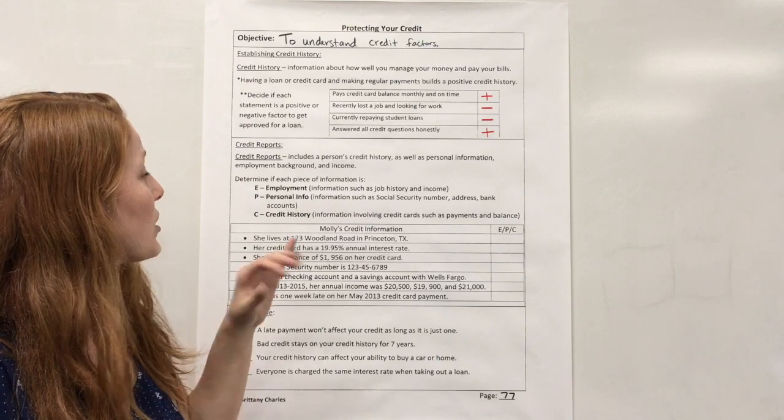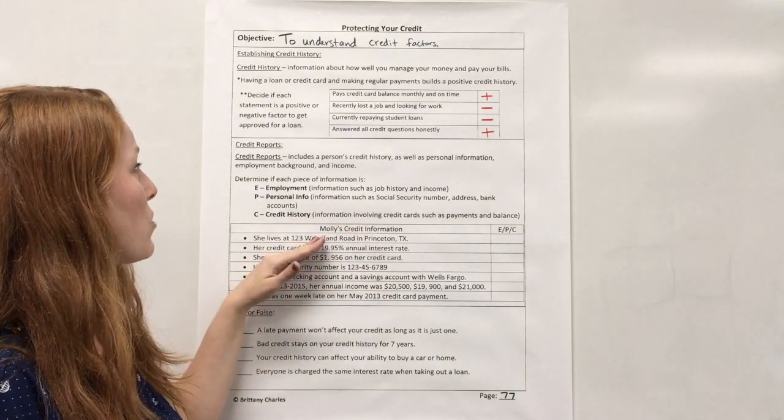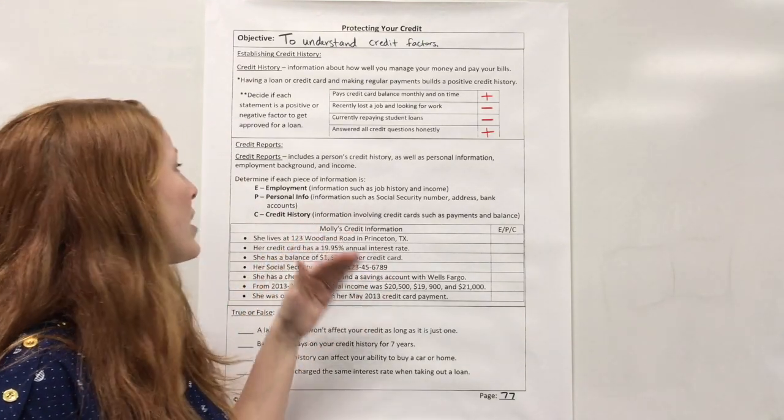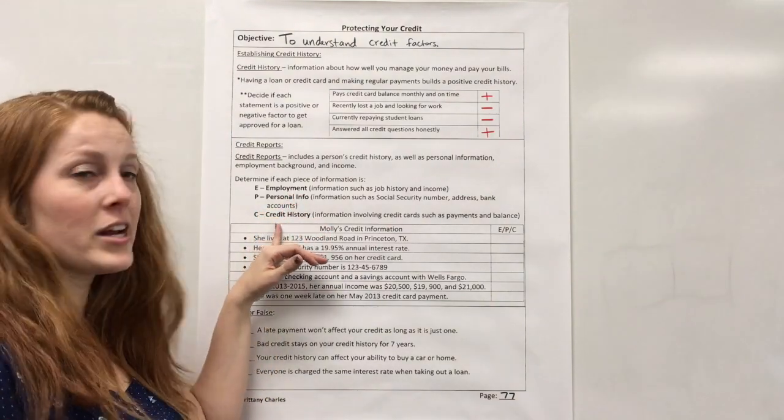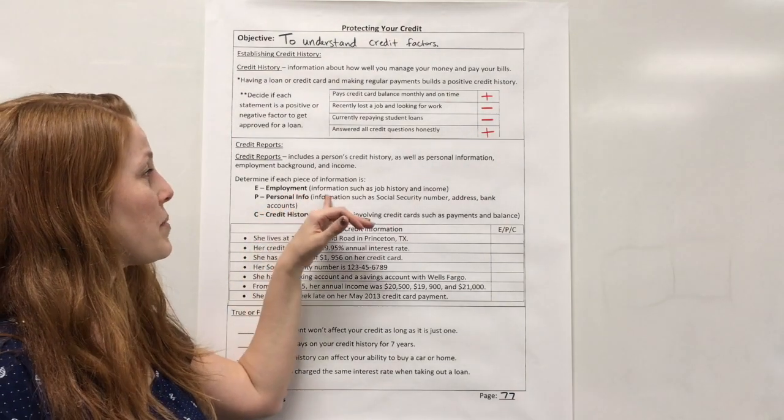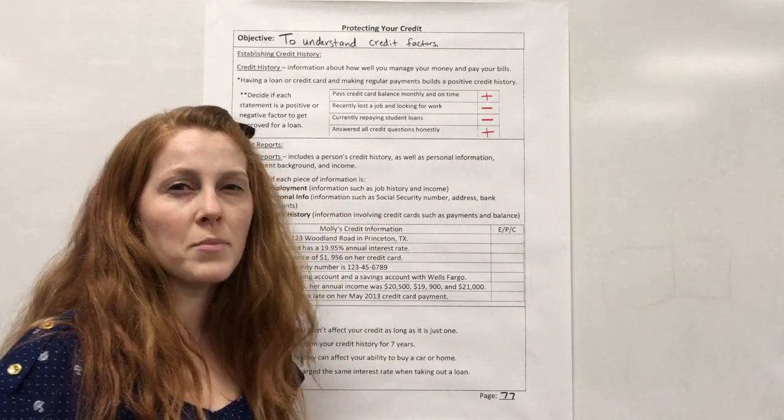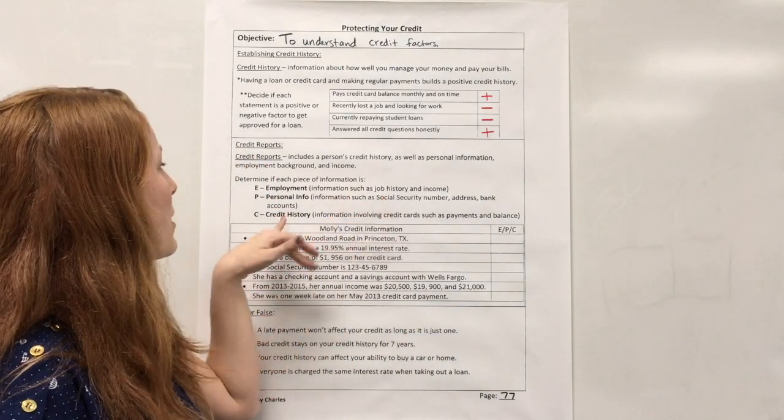Okay. So first of all, we're going to look at all of this information here and we're going to classify each one as either employment, personal info, and credit history. So employment would be information that's about your job or let's say your salary, your income.